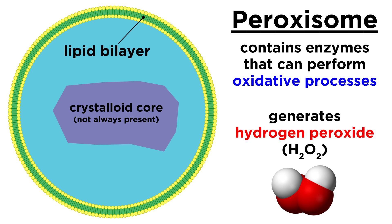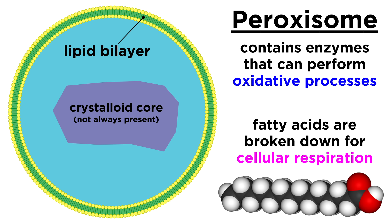Another organelle that also has metabolic function is the peroxisome. This contains enzymes that perform oxidative processes, which make hydrogen peroxide as a byproduct. These work with mitochondria by breaking down fatty acids into smaller components that are ready for cellular respiration.